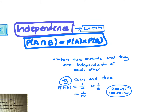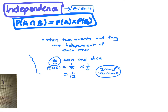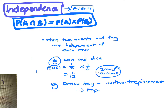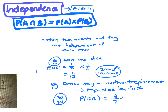Something that wouldn't be independent would be if you did something without replacement. So if you drew something from a bag without replacement, the second probability is impacted by what happened on the first. For example, you've got three red and four blue balls, and you want the probability of red and red. So it's three on seven times two on six — the second one was impacted by what happened on the first.